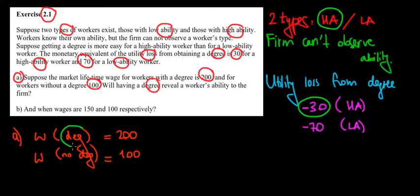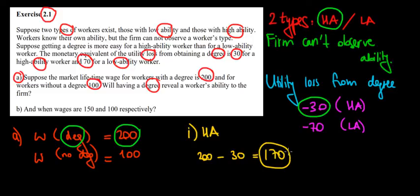If the wage from getting a degree pays us 200 dollars and we have a utility loss of 30, let's see what's the final outcome. If we are a high ability worker, we would have 200 dollars from our wage minus 30 dollars worth of utility because we have to study for it, so that would give us 170 dollars worth of utility from getting a degree.